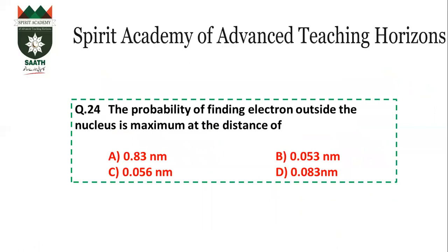Question number 24: The probability of finding an electron is maximum at what distance? The answer is 0.053 nm — this is from Bohr's model. It equals 0.529 Å, which is the radius of the first orbit in Bohr's model. In nanometers, this is 0.053 nm.